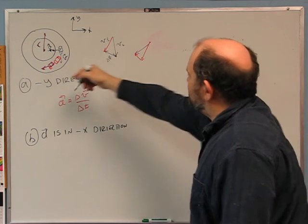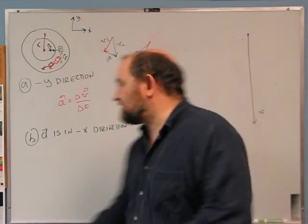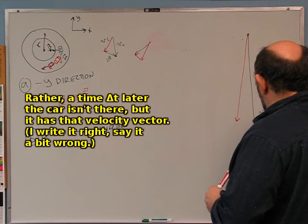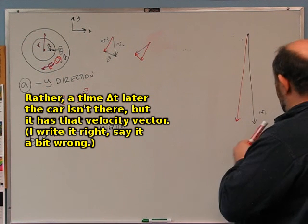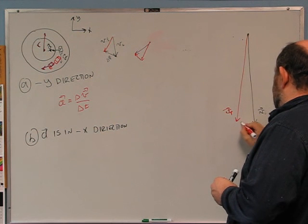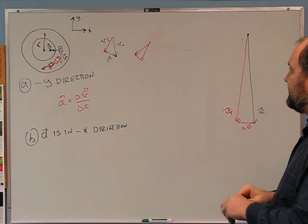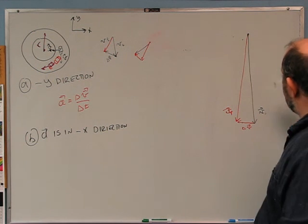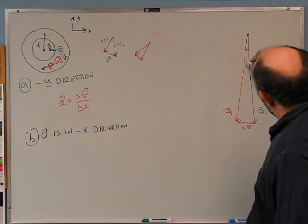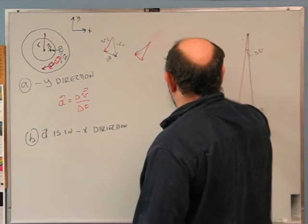I'll take the car at two close times. Here is vi, and a time delta t later the car is here with vf. The delta v is just that vector difference. To figure out delta v, if I know this small angle delta theta between vi and vf, I can work it out. Here's another thing I know: if I draw this part of the track, the car started here and a little later it's here, and the angle between the two radii is also delta theta, because the velocity is always perpendicular to the radius.